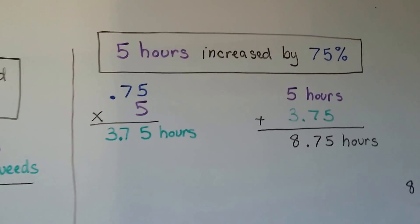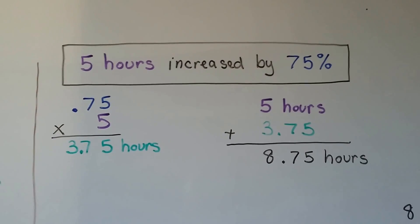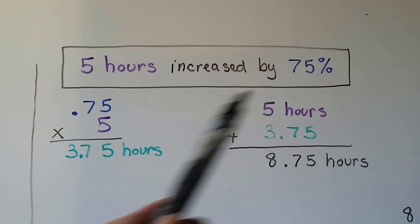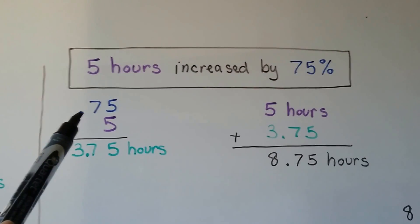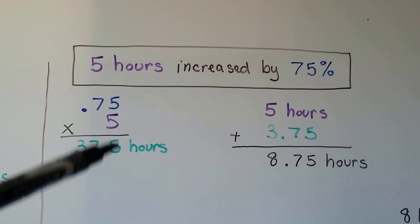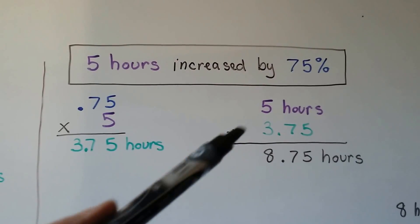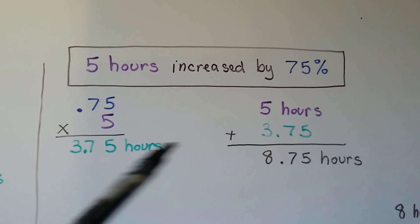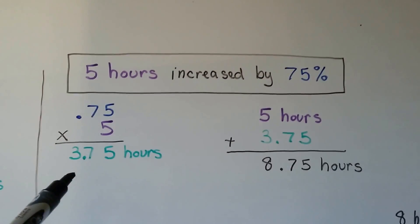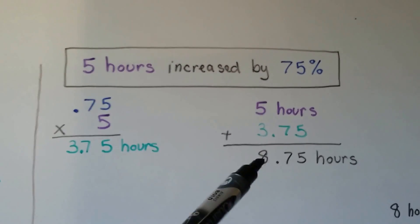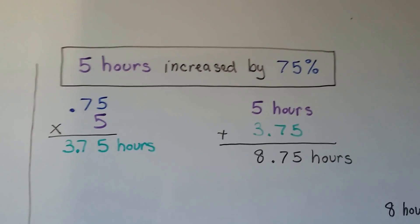If we have 5 hours increased by 75 percent, well, 75 percent is .75 as a decimal. We multiply it by the original amount, 5 hours, and we get 3.75 hours. We add the 5 hours, the original amount, with 3.75, the amount of change, and the new amount is 8.75 hours.